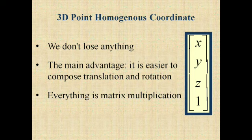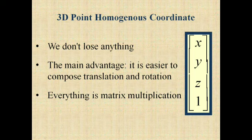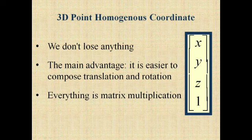3D point homogeneous coordinates. We don't lose anything. The main advantage: it is easier to compose translation and rotation. When we do composite transformation, the combination of 2 different translation and rotation, it is easier here. Whatever we do, it is simply the matrix representation. And we should do the matrix multiplication for translation and rotation.